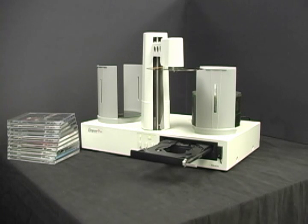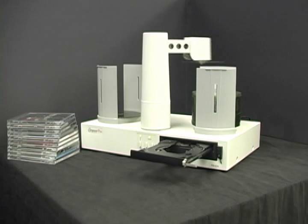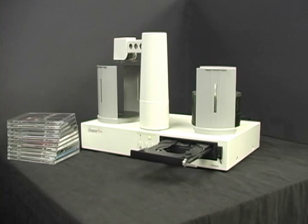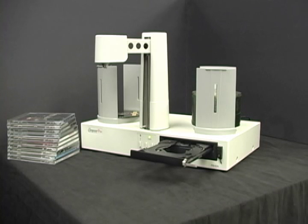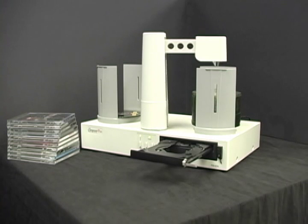You fill up one of the hoppers with blank CDs and it transfers them one at a time into the CD's drive tray where they're burned from an attached PC with some custom software. Then the arm fetches the burned CD back out of the CD tray and puts it in the completed hopper and repeats.